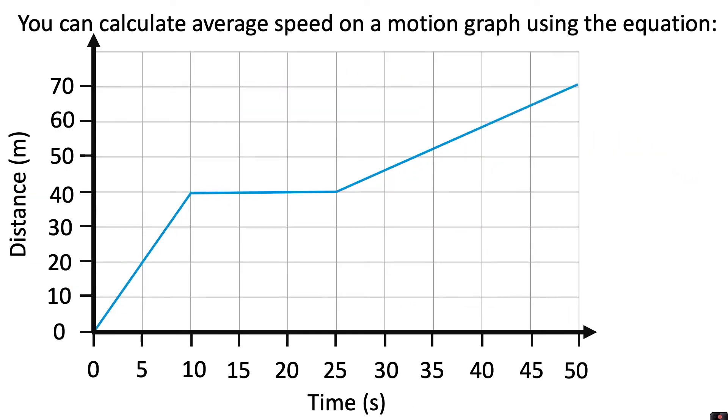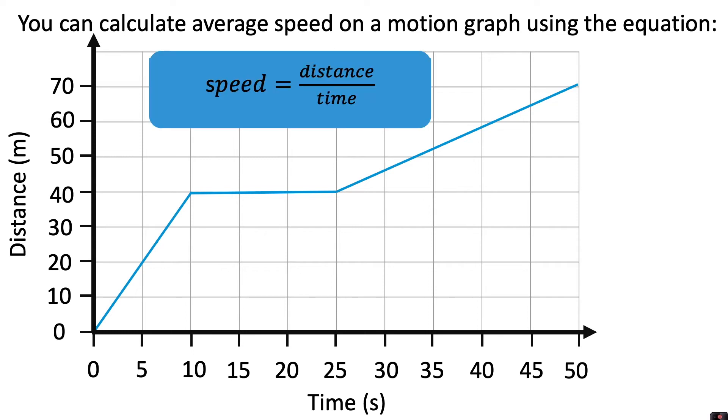You can calculate average speed on a motion graph using the equation speed equals distance over time. For example, if we wanted to calculate the speed of the rhino in the first section of the graph, we would see the distance travelled which is 40 meters and the time it took which is 10 seconds. So the speed would be 40 meters divided by 10 seconds, which would be 4 meters per second.